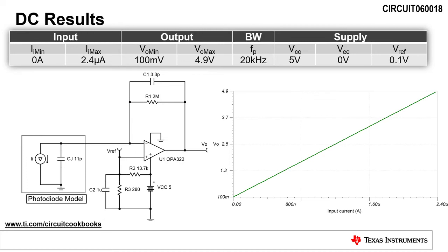A DC sweep of the input current from 0 amps to 2.4 microamps yields an output voltage from 100 millivolts to 4.9 volts. This verifies the functionality of the circuit.